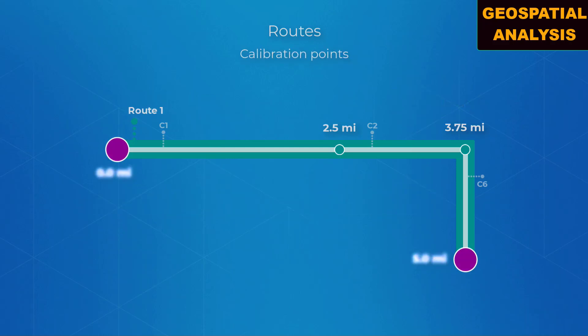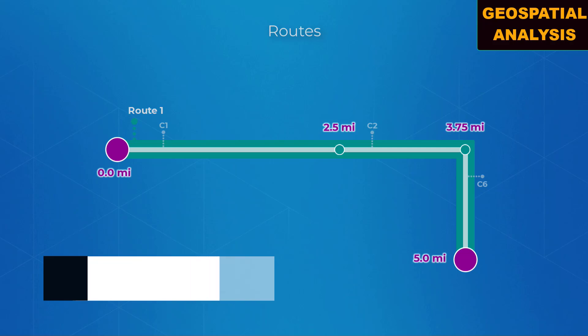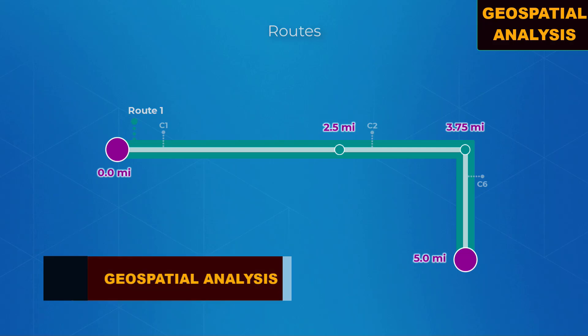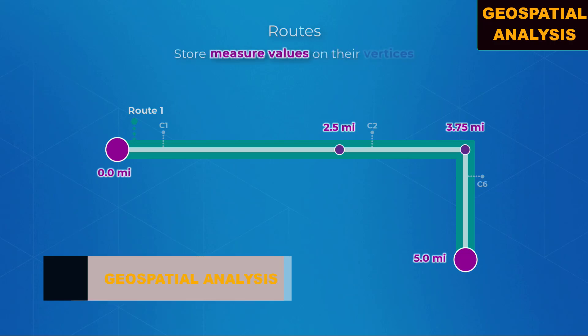Two calibration points define the measure for a specific location on a route. The measures between two calibration points are derived by linear interpolation. Routes store measure values on their vertices to model linear distance.